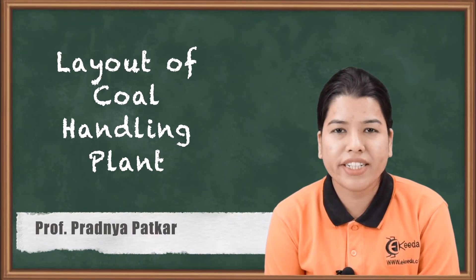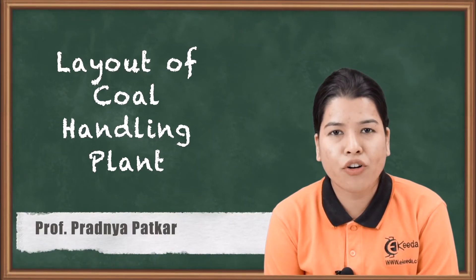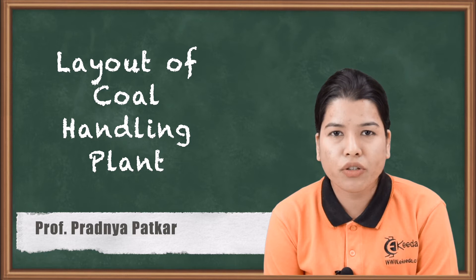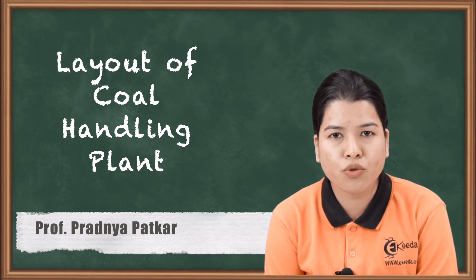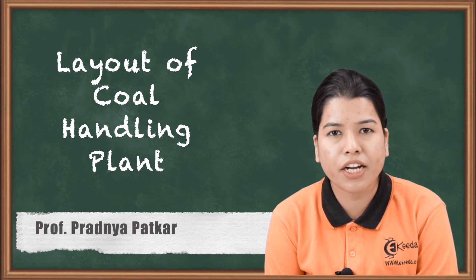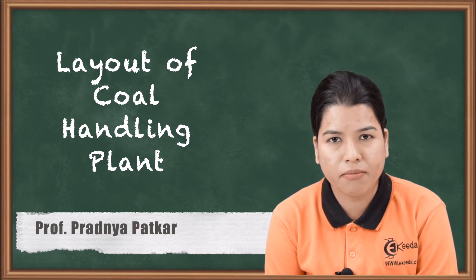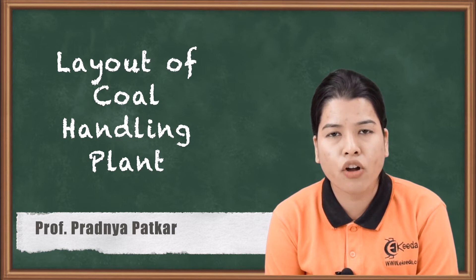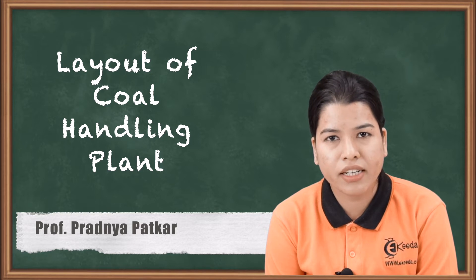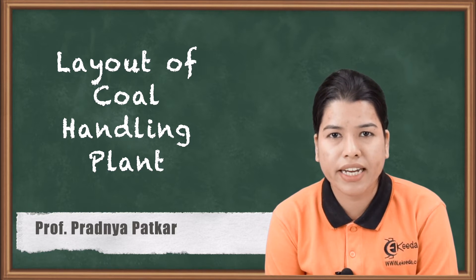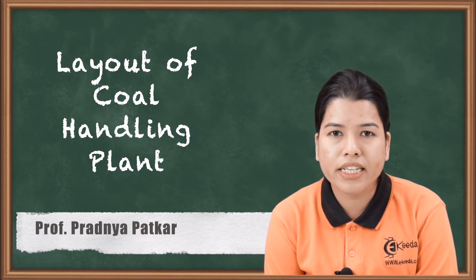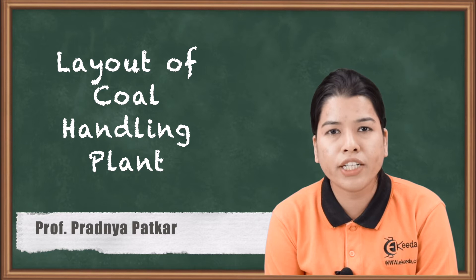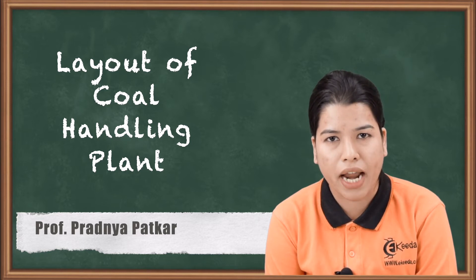Hello friends. We have already studied the layout of the thermal power plant. We know that in a thermal power plant, coal is used as the source for boiling the water, which eventually gets converted into steam. This steam is operated on the turbine, which is coupled to the generator and electrical energy is generated. In this video, we are going to study about the coal handling plant.